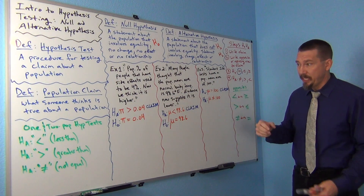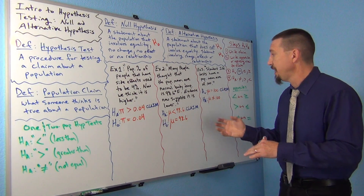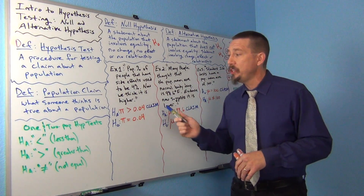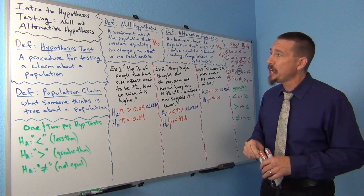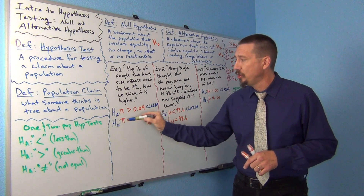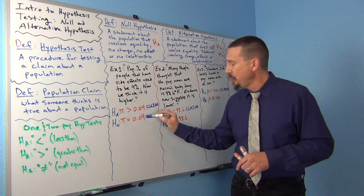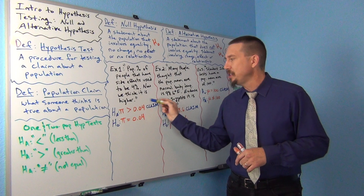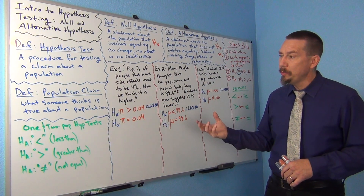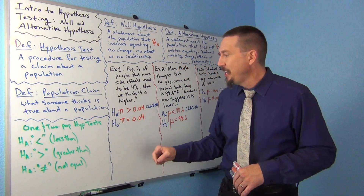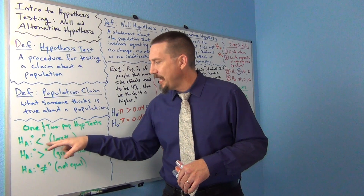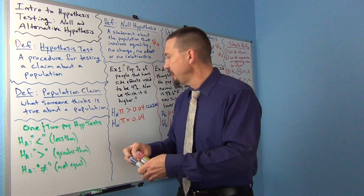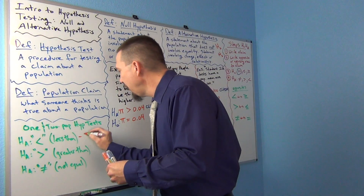These actually go with a certain type of test. HA always decides the test — not H0, not the null hypothesis. The alternative hypothesis decides the test. In hypothesis testing, we're often trying to reject the null hypothesis; if we do, we're sort of supporting the alternative. If your HA has less than — less than looks like an arrow pointing to the left — this would be considered a left-tailed test.